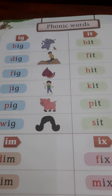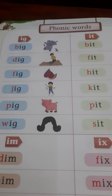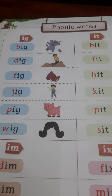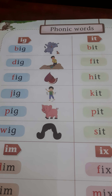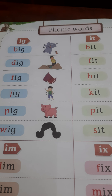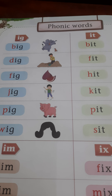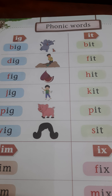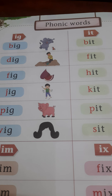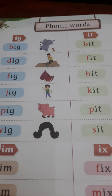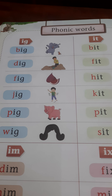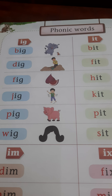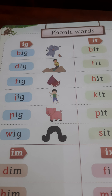Good morning little brainies. Open your Gryphalko book at page number 14. Today we are going to read a new sound — the short I sound words. Aaj hum kaunse phonic words read kareenge? I sound.